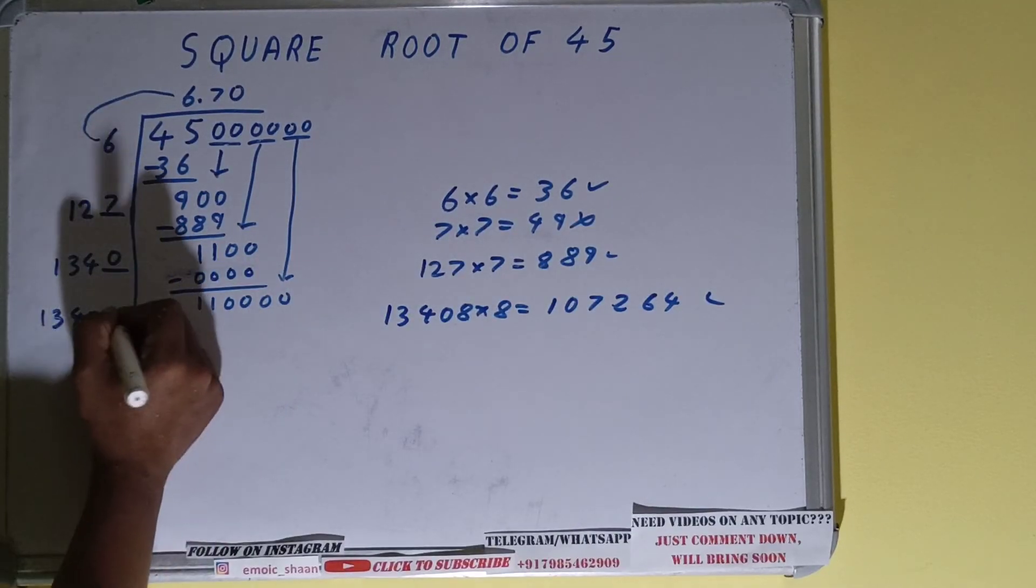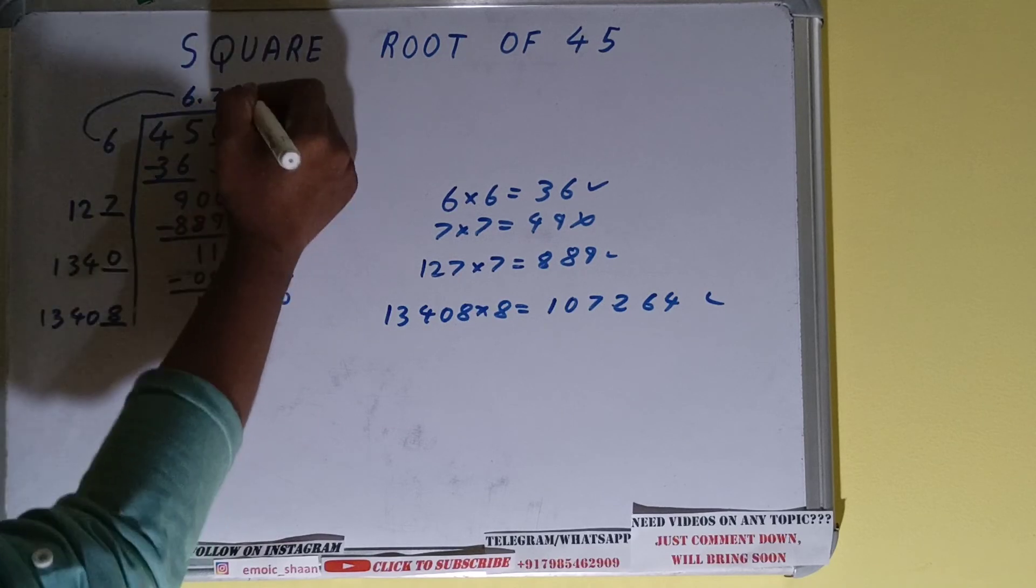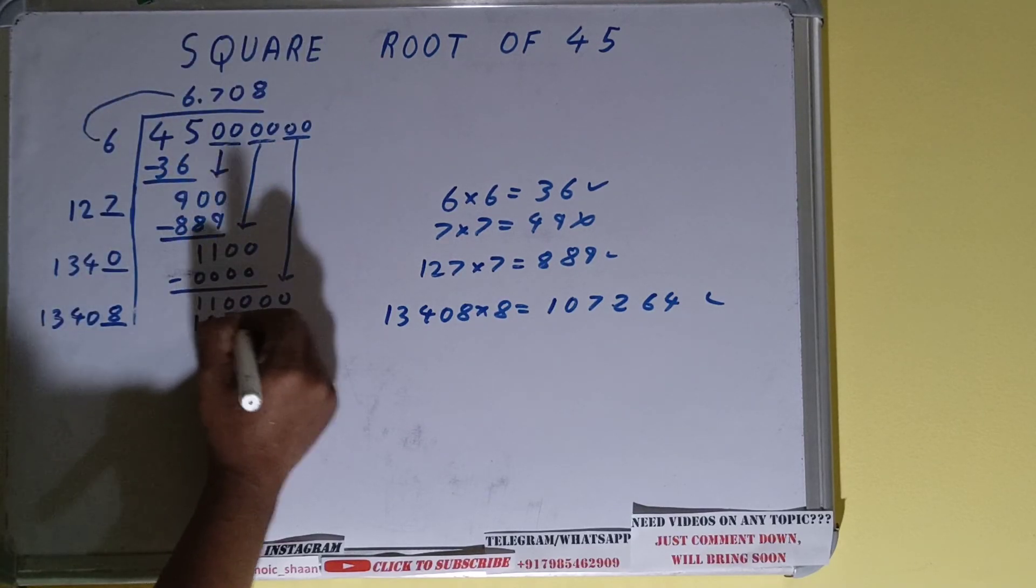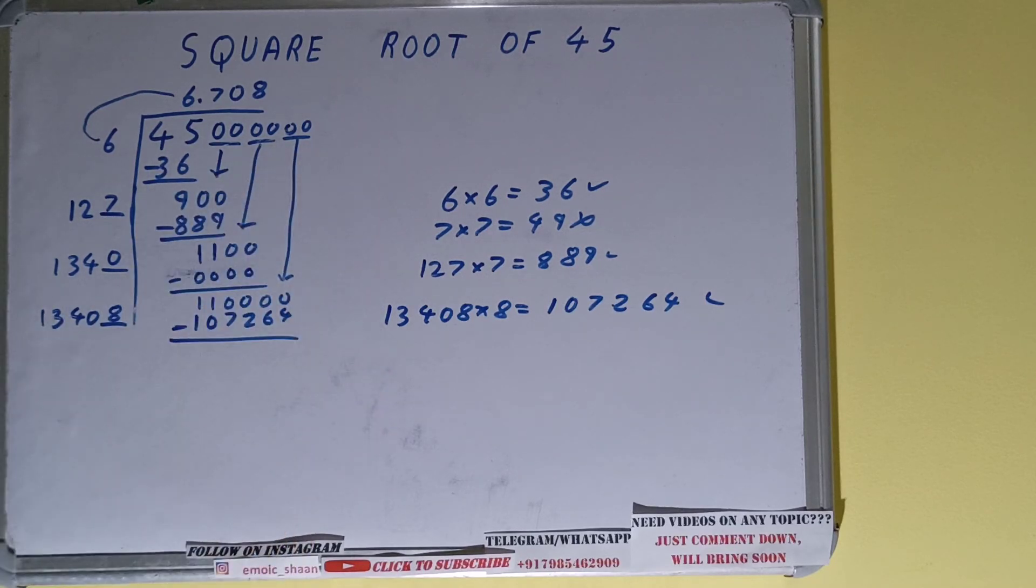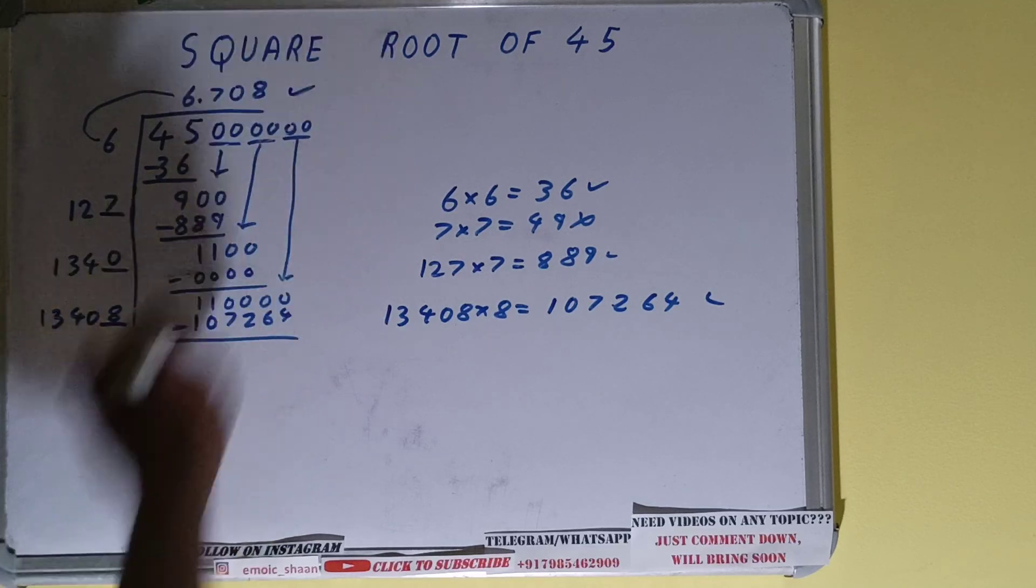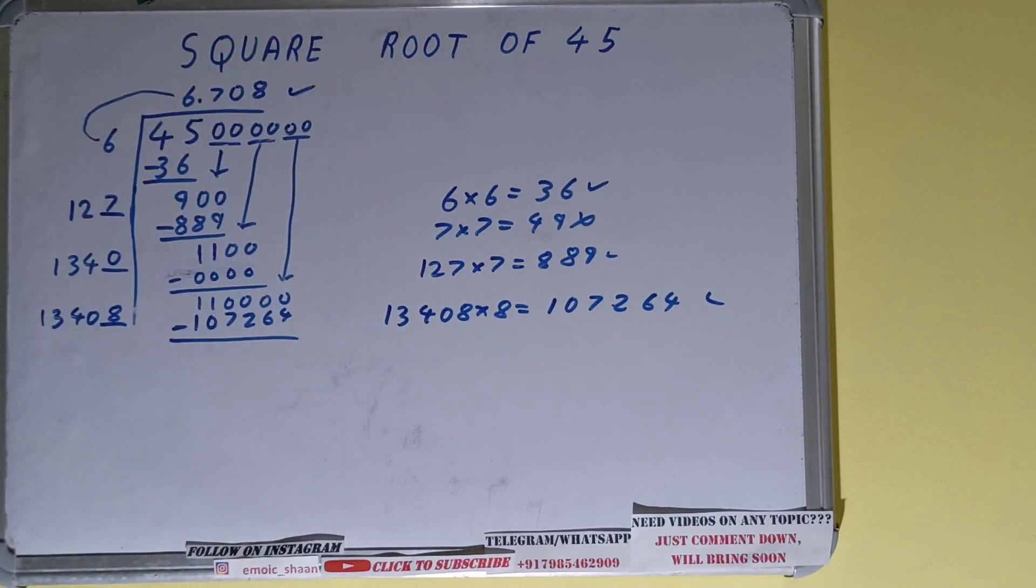So let's take that 8 here and 8 here and we'll have 107,264. Now we don't need to subtract because we already got the answer correct up to three decimal places, so our work is done.